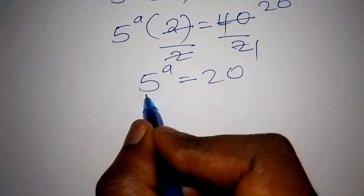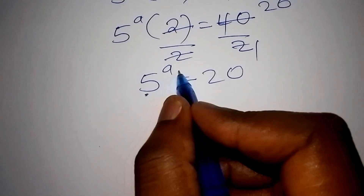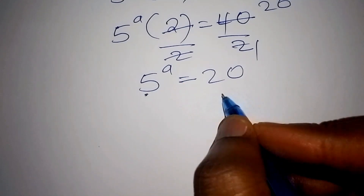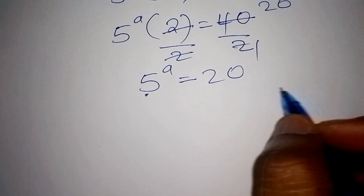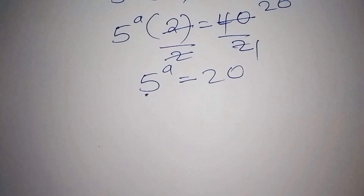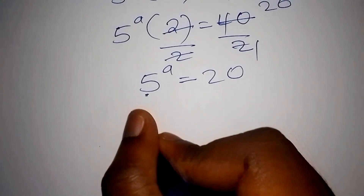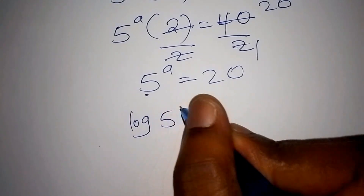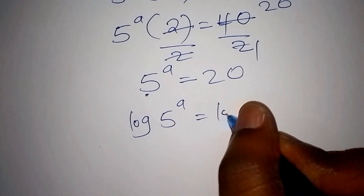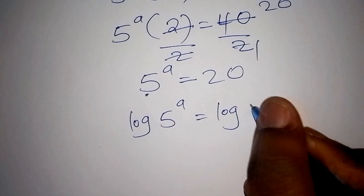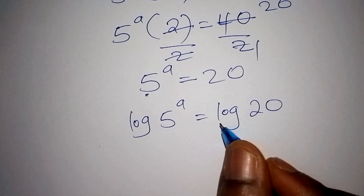Here, 20 is our whole number, 5 is the base, and a is the index. It is possible to express 20 in the form of a base and an index. So we shall introduce the log on both sides: log of 5 to the power of a equals log of 20.